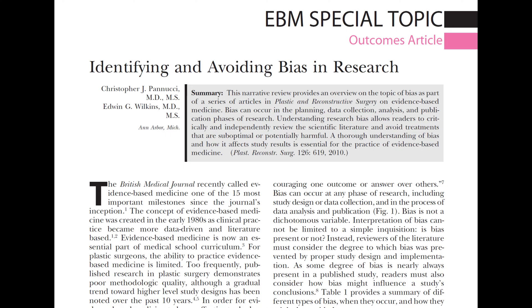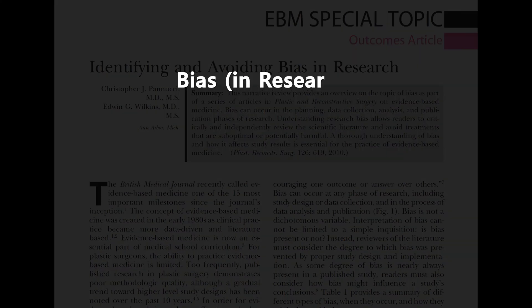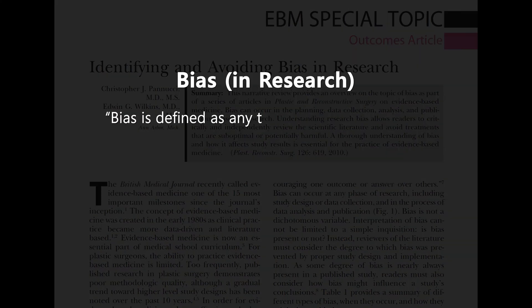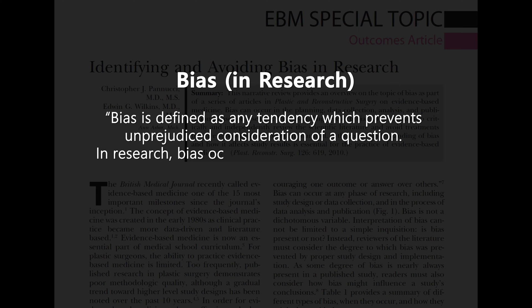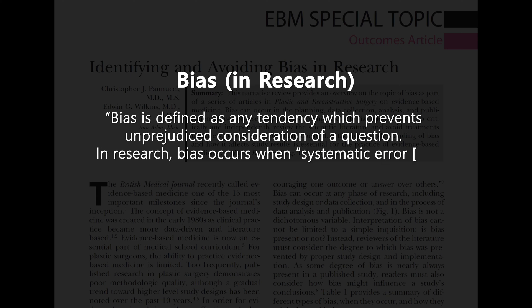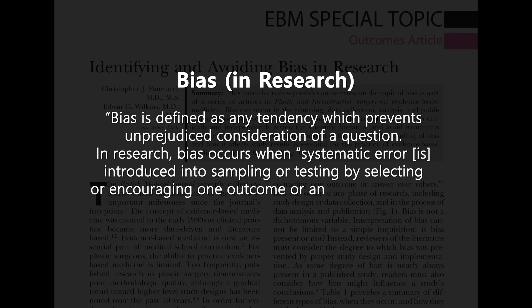Taking the definition from a paper by Penucci and Wilkins, bias is defined as any tendency which prevents unprejudiced consideration of a question. In research, bias occurs when systematic error is introduced into sampling or testing by selecting or encouraging one outcome or answer over others.